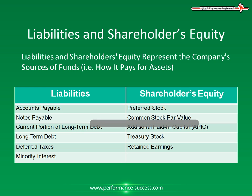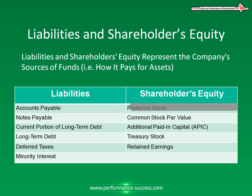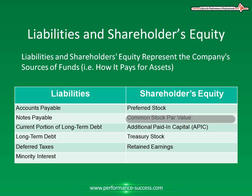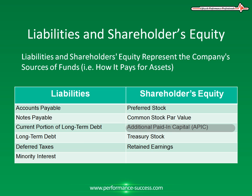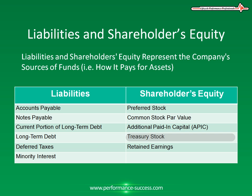Now, let's take a look at Shareholders' Equity. The components of Shareholders' Equity are normally: one, Preferred Stock — this is stock that has special rights and takes priority over common stock. Then you have Common Stock Par Value — this is the par value of units of ownership of a corporation. You have Additional Paid-In Capital, or APIC — this represents capital received by a company when its shares are sold above their par value. Next you have Treasury Stock — this is common stock that had been issued and then reacquired, or bought back by a company.